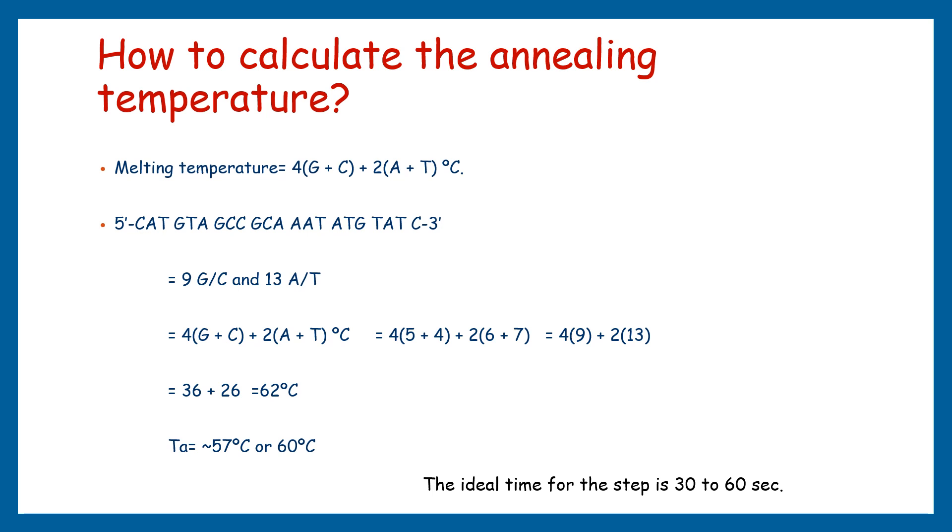If we summarize this, we have to put 3 to 4 temperature variations in the PCR to check the best one, so we can't rely on a single temperature. This is a manual method, but nowadays much more advanced and accurate online software is available that can find the best primer set as well as calculate the annealing temperature for our reaction.